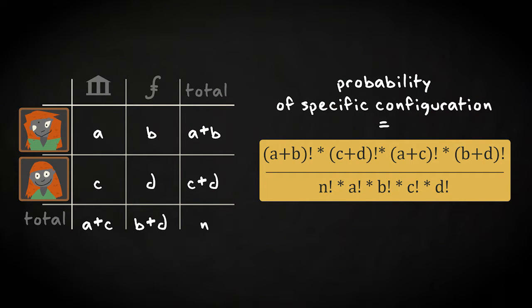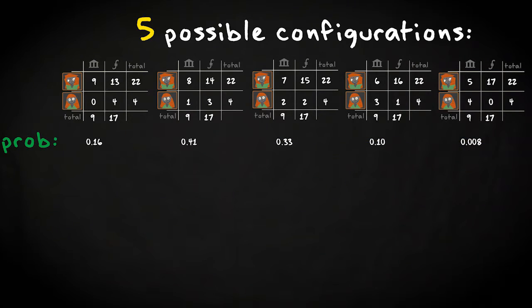It gives the probability that this specific configuration in a 2 by 2 table occurs. In the numerator all factorials of the marginal frequencies are multiplied. And in the denominator all factorials of the joint frequencies as well as the factorial of the total sample size. That's a lot of multiplication. But a computer can do the work for us.